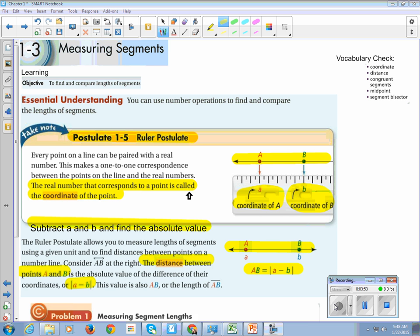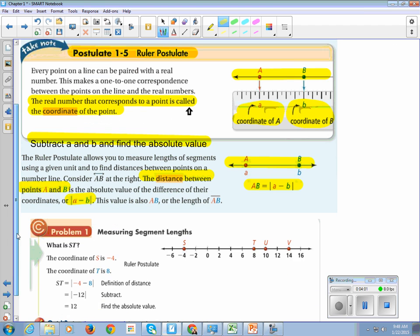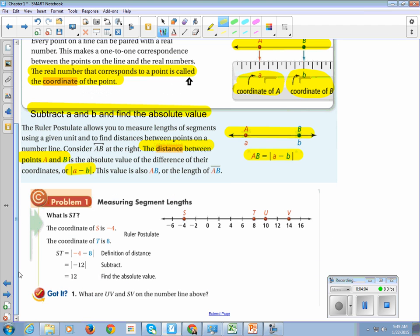Let me read this through, and then I'll highlight the important things that you need to write down. The ruler postulate allows you to measure lengths of segments using a given unit and find distances between points on a number line. Consider the line AB at the right. The distance between point A and B is the absolute value of the difference of their coordinates, or absolute value of A minus B. So here's what you do. Subtract A and B, find the absolute value.